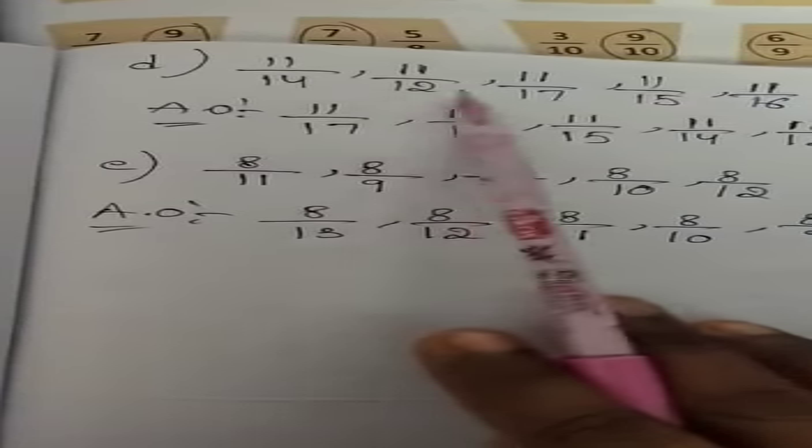For D and E sums, the numerators are equal. When numerators are equal, the bigger number is the smaller fraction. So for D we have 11/14, 11/12, 11/17, 11/15, 11/16. The biggest denominator is 17, so 11/17 is the smallest fraction.